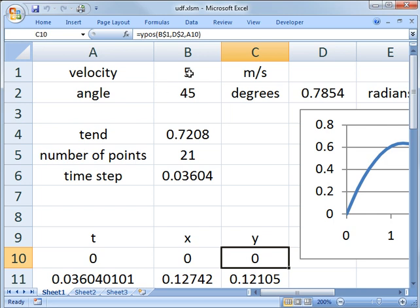So I set up a little sheet. I put in a velocity and an angle in degrees. We actually need the angle in radians, so I calculate that. And then right here, I calculate the time at which we get to the end. That is the time when the ball hits the ground. So you can see here, I call the TEND function. And the arguments are B1, which is the velocity, and D2, which is the angle in radians. So I send those two to the routine, and I get back the end time, which in this case is 0.72 seconds.